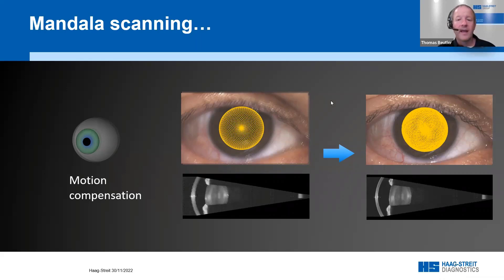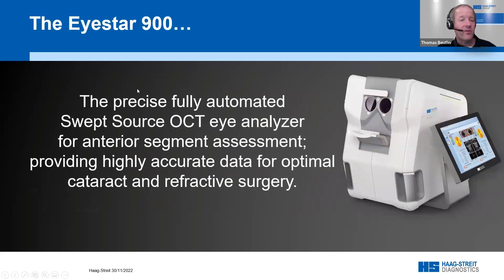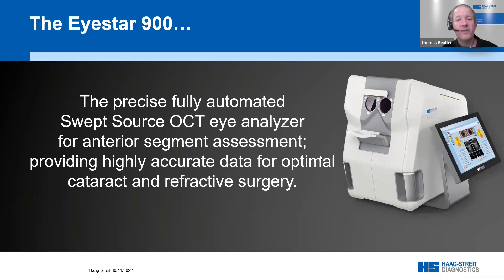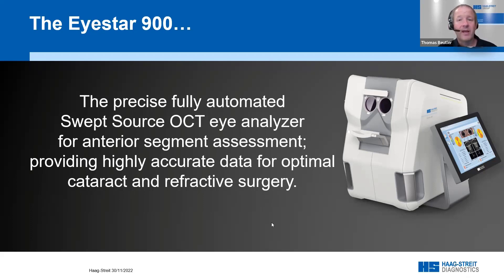The iStar is a precise, fully automated swept-source OCT anterior segment analyzer for all applications from anterior segment analysis to cataract and refractive surgery. You get all the data you need in one single measurement process in a small-footprint, self-contained device with no need for an external PC. The screen can be moved to the side, back, or opposite side depending on your practice needs, so it can essentially be set up anywhere. Thank you very much for your attention — I'm now here to answer your questions.